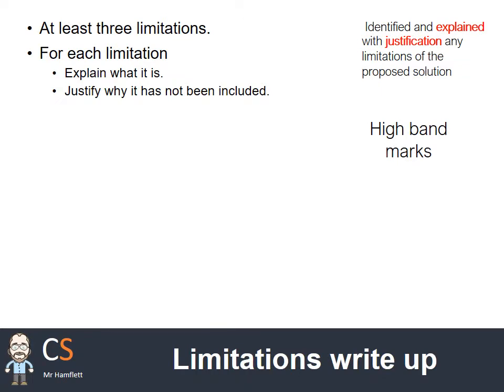You need to have at least three limitations — that is the golden number. And for each one, explain what it is and then justify why it has not been included.